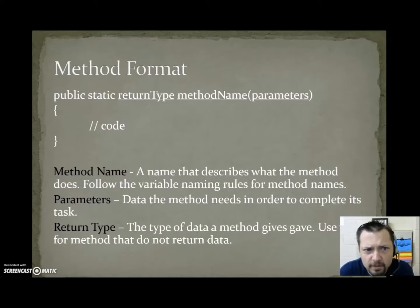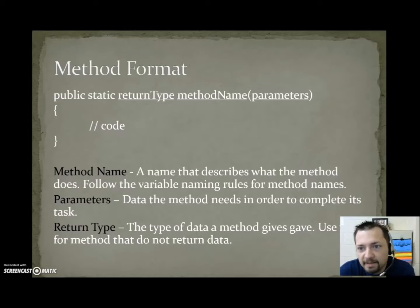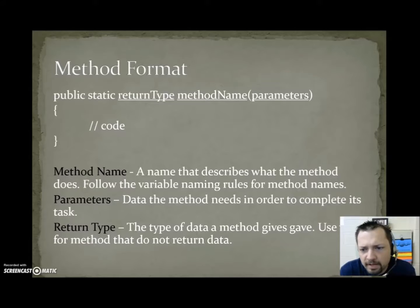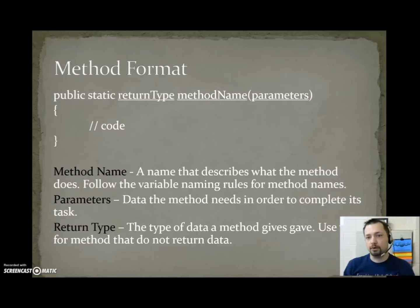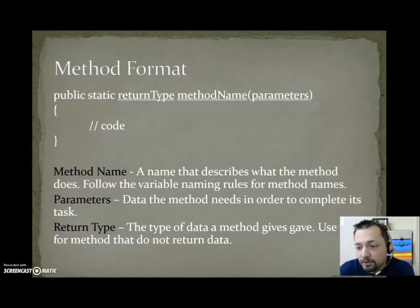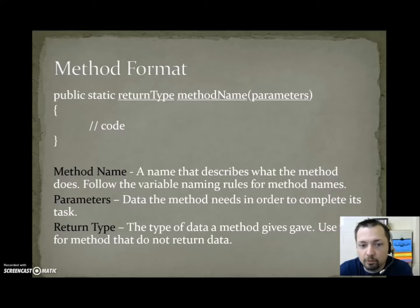The format for a method is going to be: public static, return type, method name, parameters. A method name is a name that describes what the method does, and you'll need to follow the variable naming rules — start with a lowercase letter, and when you get to a new word, use either an underscore or a capital letter. For example, math.pow — we know that pow does power, so it's descriptive. If you're calculating the shortest path, you might call your method shortestPath.